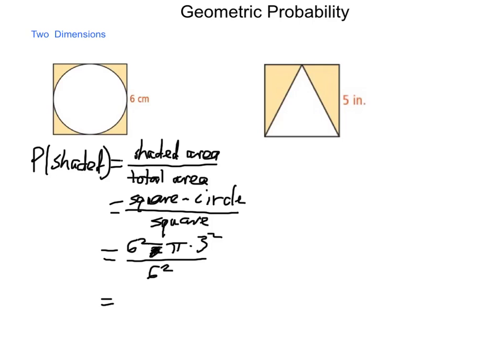6 squared is 36, pi times 3 squared, that's 9 times pi, which comes out to be, 9 pi is approximately 28 and 27 hundredths, divided by the area of the square, which is 36. Now, subtracting that numerator will give us 7.73, divided by 36, and then that comes out to be approximately 21%, or 0.21.